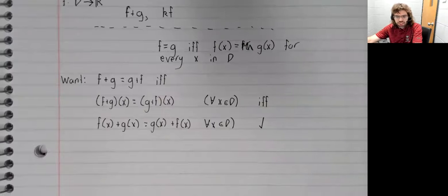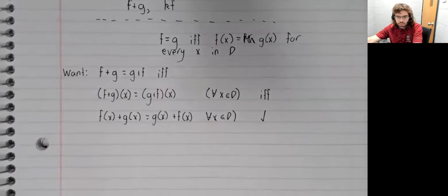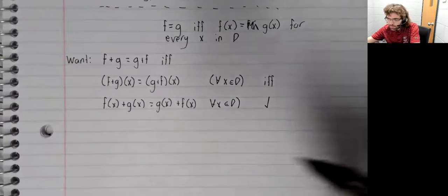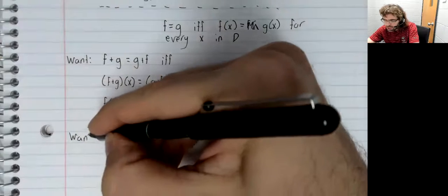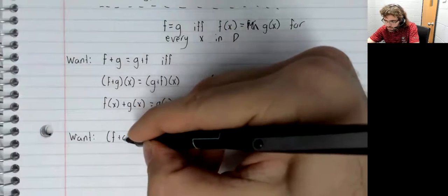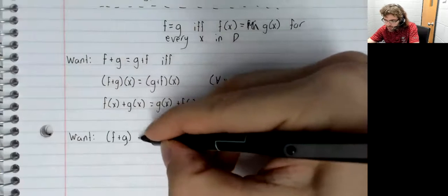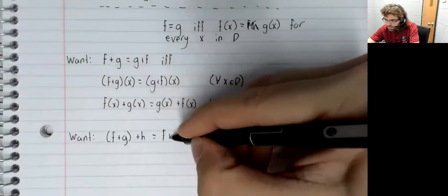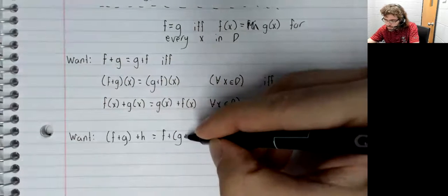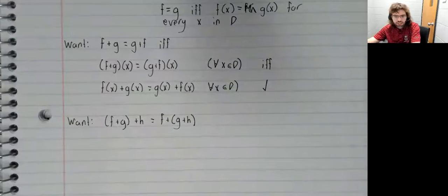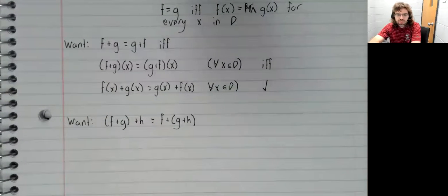And most of the arguments are identical, so I'm not going to show all of them in depth. Like the next thing we want is that addition is associative, and the argument is the same.